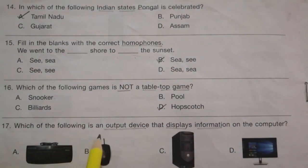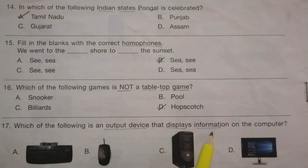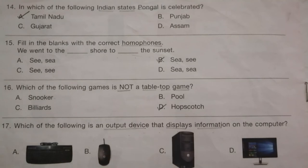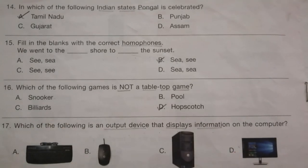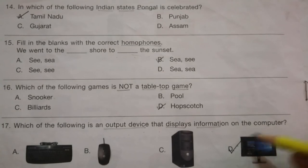Question 17: Which of the following is an output device that displays information on the computer? Look at the given options — this is keyboard, this is mouse, this is CPU, and this is monitor. The answer is D, monitor.